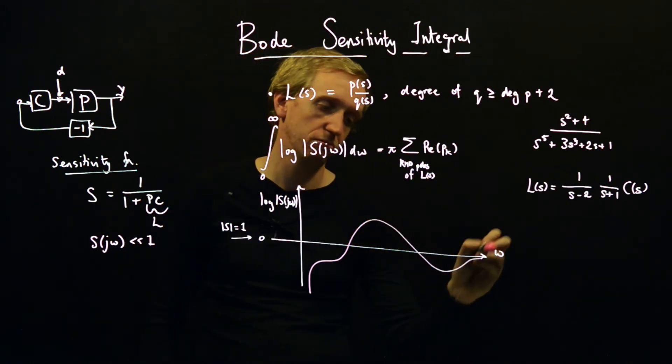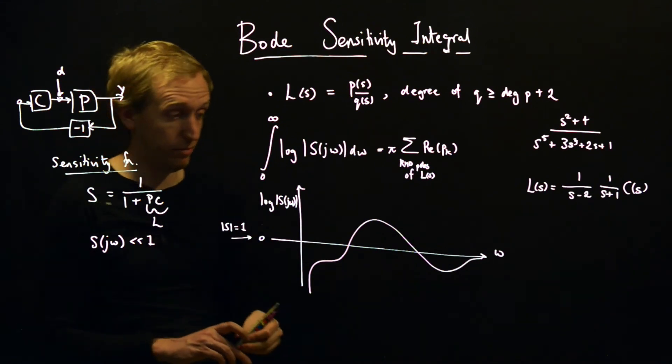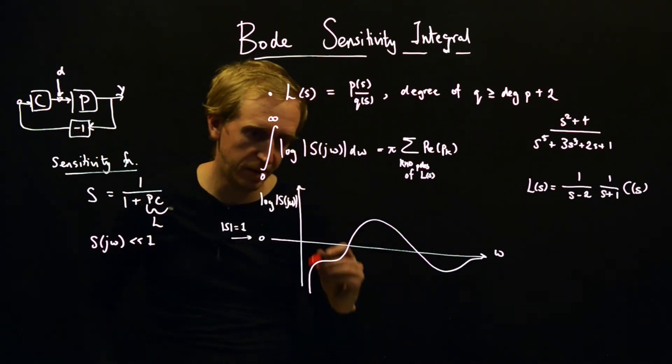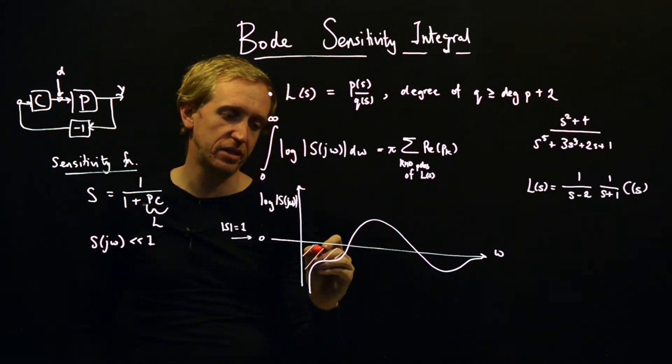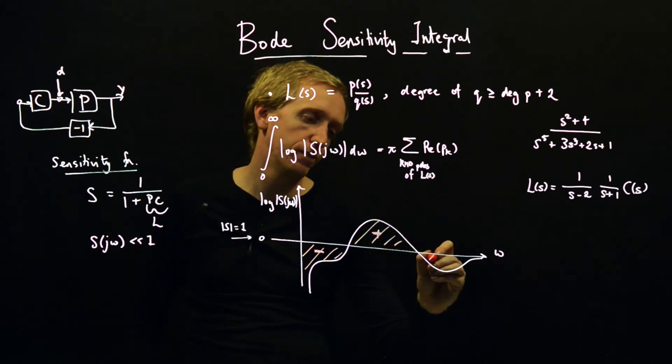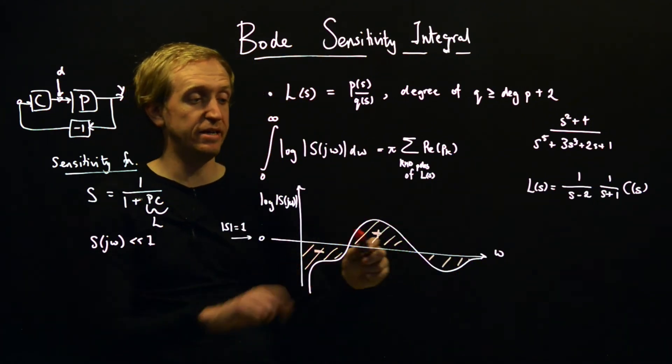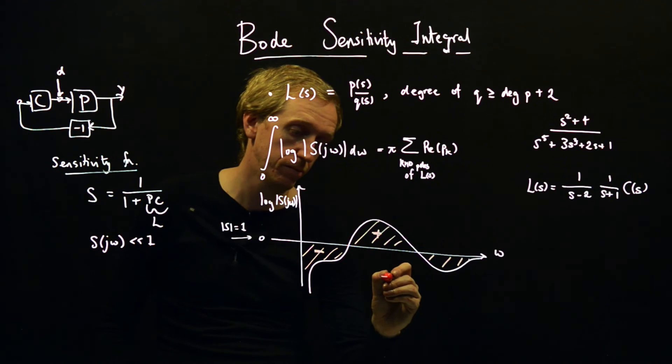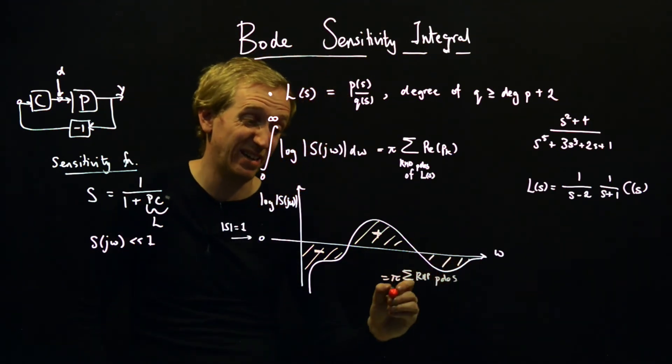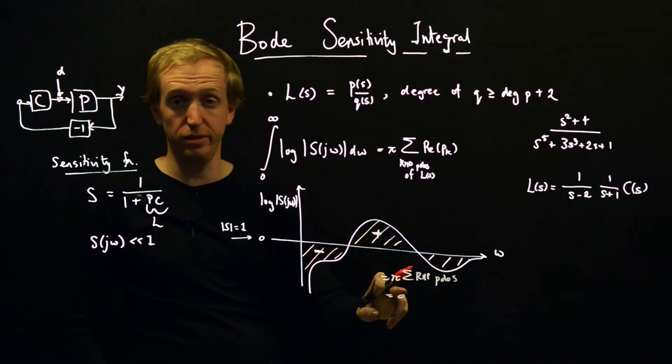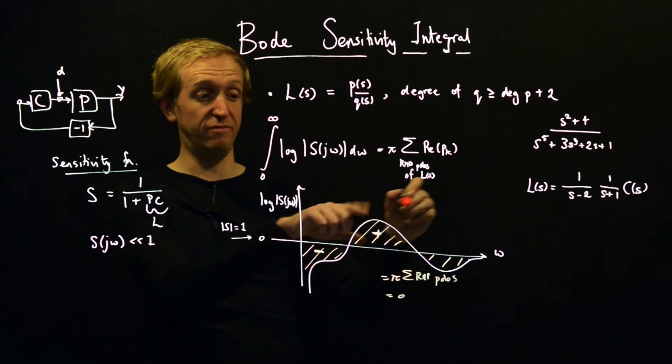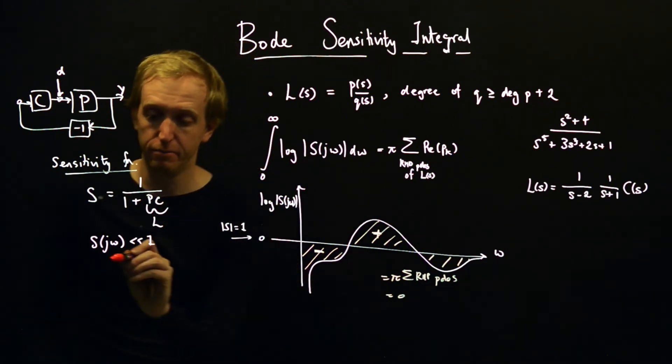And so now we just plot S of jω, the absolute value, log of S of jω, and we get some curve that looks something like this, say. And what the Bode sensitivity integral is telling us is that this signed area - so this is a negative area, this is a positive area, this is negative, and so on - this area, the net area here, must be equal to π over the sum of right half plane poles. So in particular, at best this is zero if we have a system with no right half plane poles. The negative area must equal the positive area. And if we have right half plane poles, then things get even worse - we have to have more positive area.